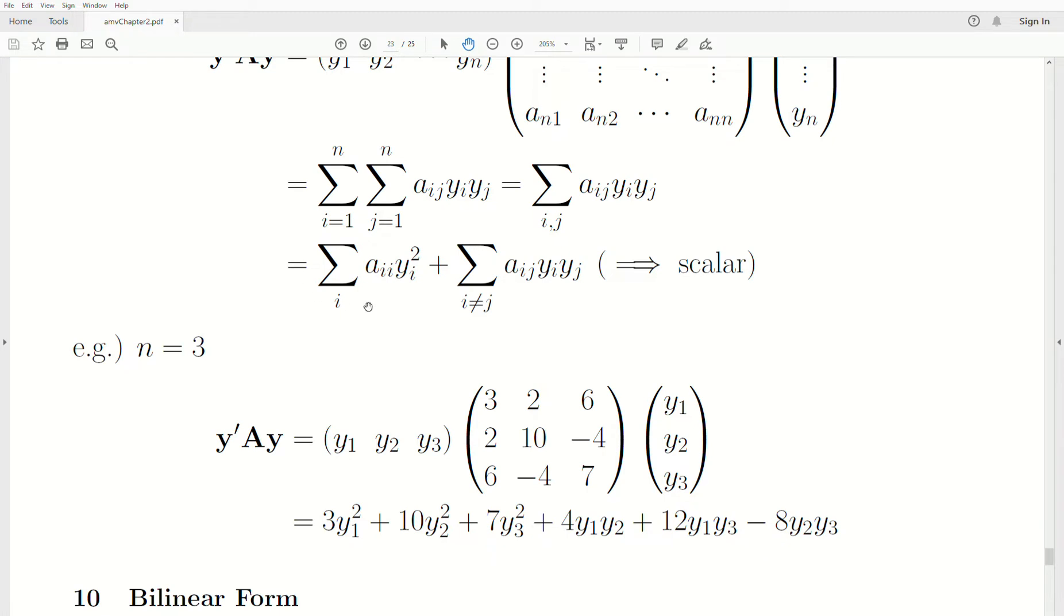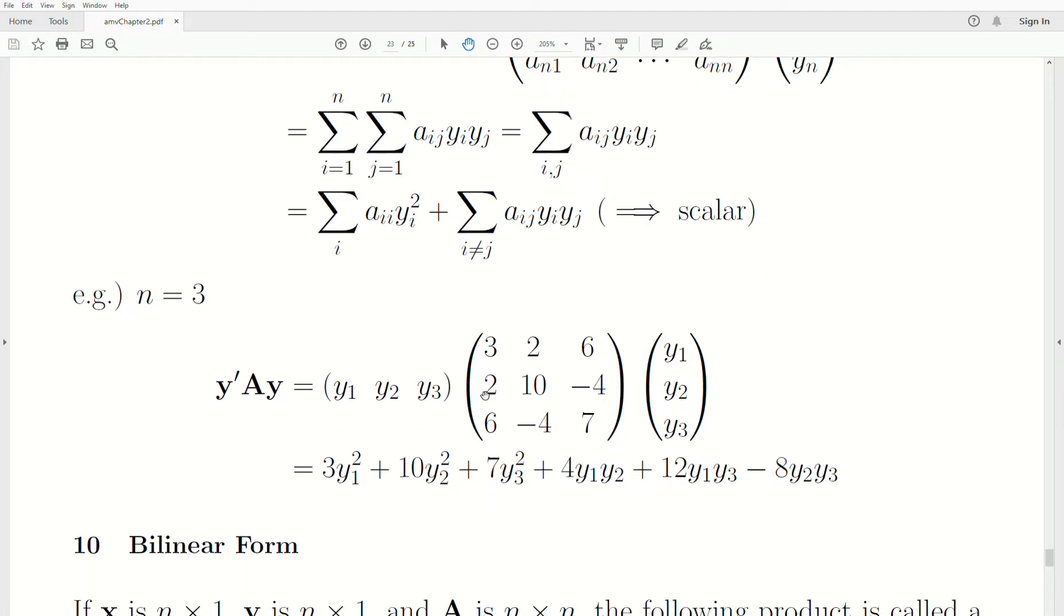That's this first sum right here. And then the others, so this is row 2, column 1, and this is row 1, column 2. Notice it's a symmetric matrix. But these two add to this piece. Here we're at row 3, column 1. This is row 1, column 3. So those two add to this piece. And then the minus 4, so this is row 3, column 2, row 2, column 3. So that adds to the minus 8. We'll do much more with this as we progress through these lectures. But I just wanted to quickly introduce a quadratic form.